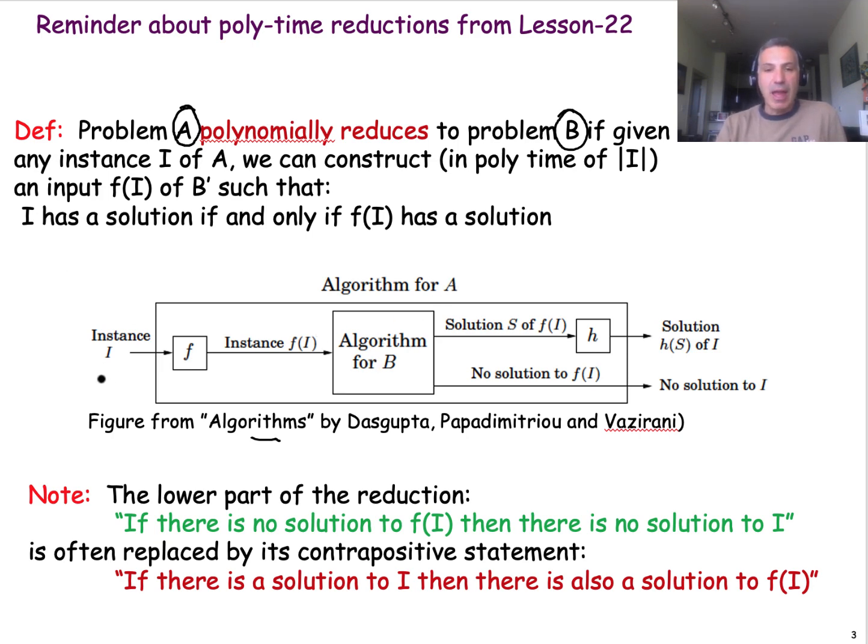Imagine that we start with any instance of problem A. Let's call this instance I. It is important that it has to be any instance, because if we really want to solve problem A, we have to be able to solve it for any instance of that problem. So we start with this instance I.